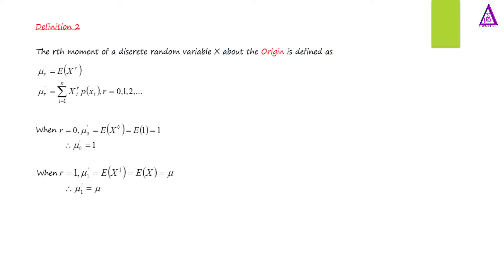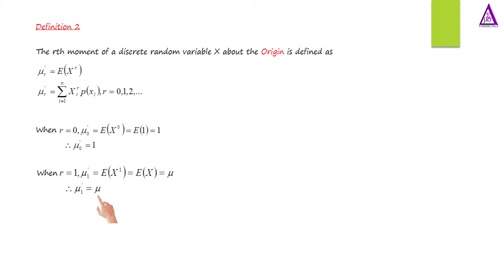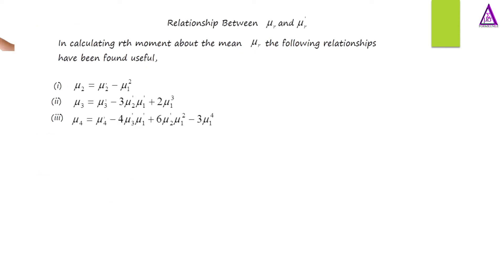When r equals 1, the moment of a discrete random variable about the origin equals the expected value of x raised to power 1, which equals the expected value of x, which is equal to mu. Therefore, the r-th moment of a discrete random variable x about the origin when r equals 1 is equal to the first moment about the mean.